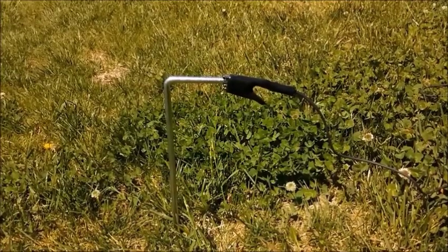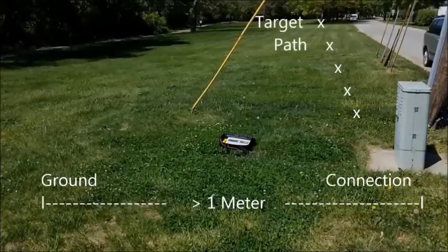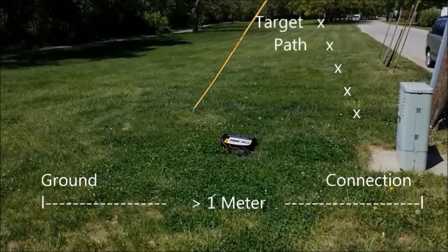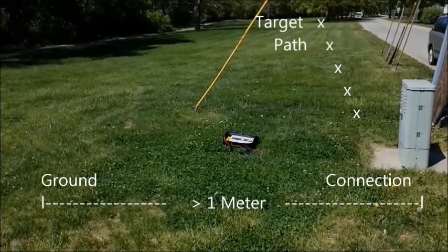Connect the black clip to an independent ground rod placed at least one meter from the connection point and at a 90 degree angle to the path of the target conductor.